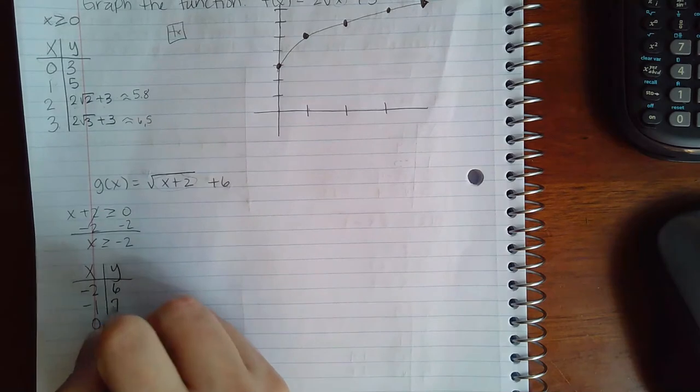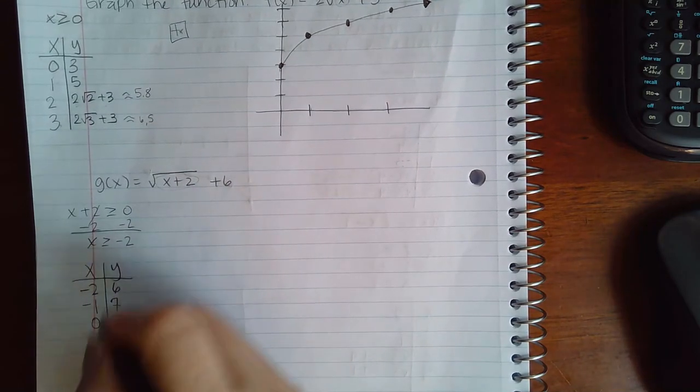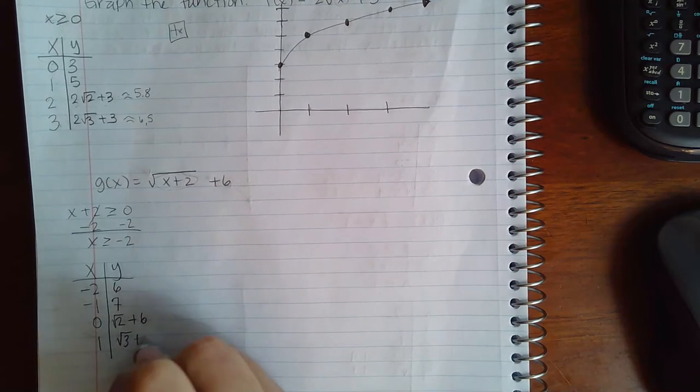And so then I plug these in. I'm going to get 6 here, I'm going to get 7 here, I'm going to get √2 + 6, and here I'm going to get √3 + 6.